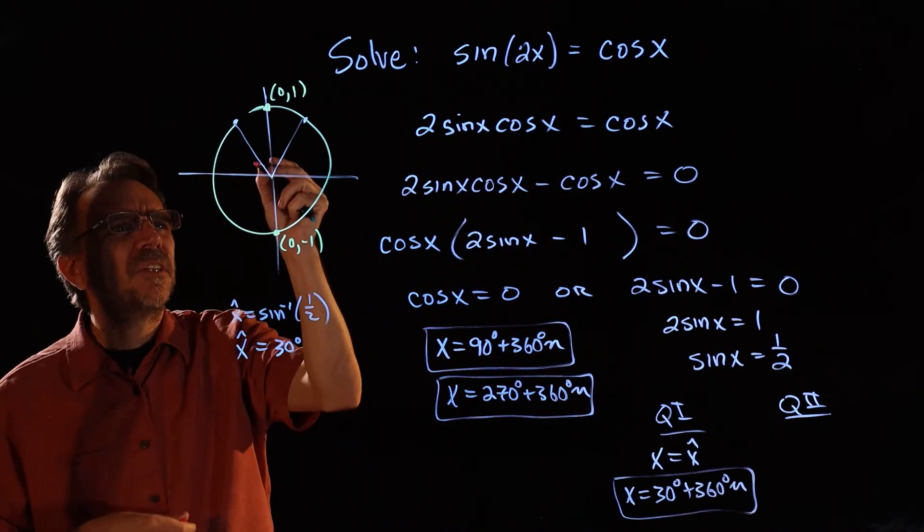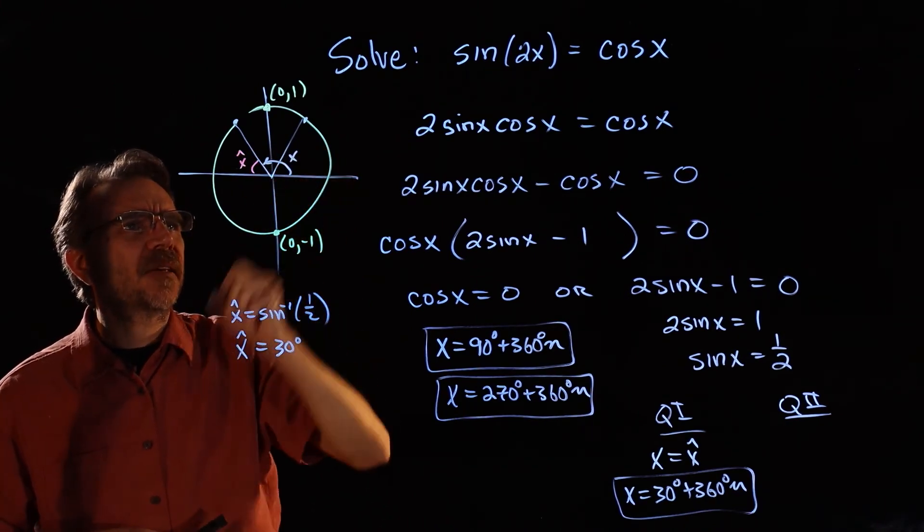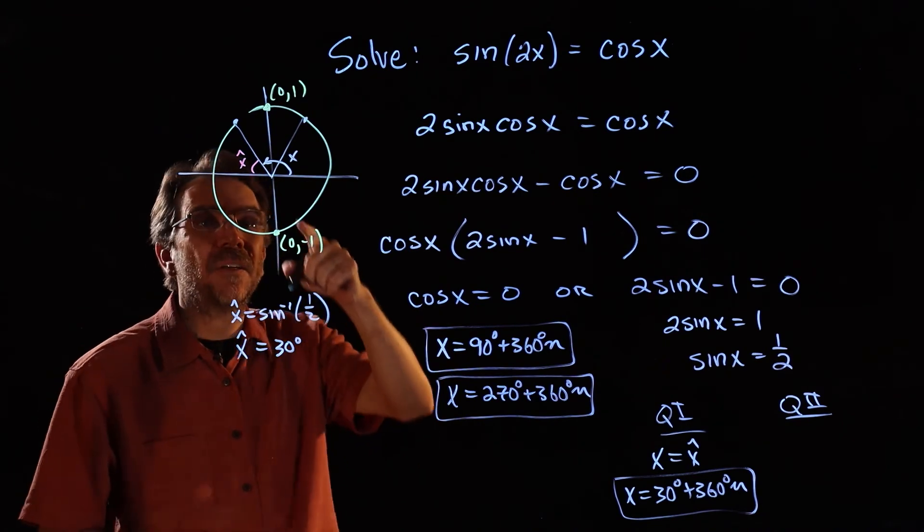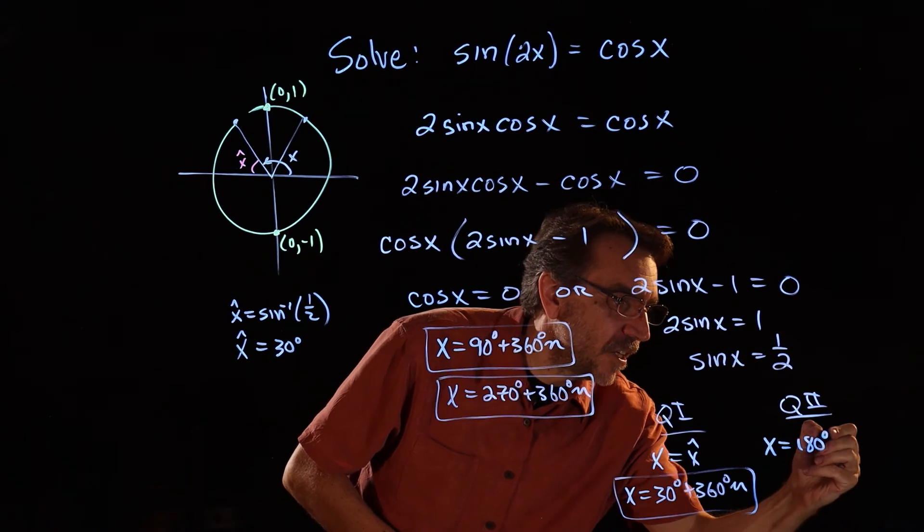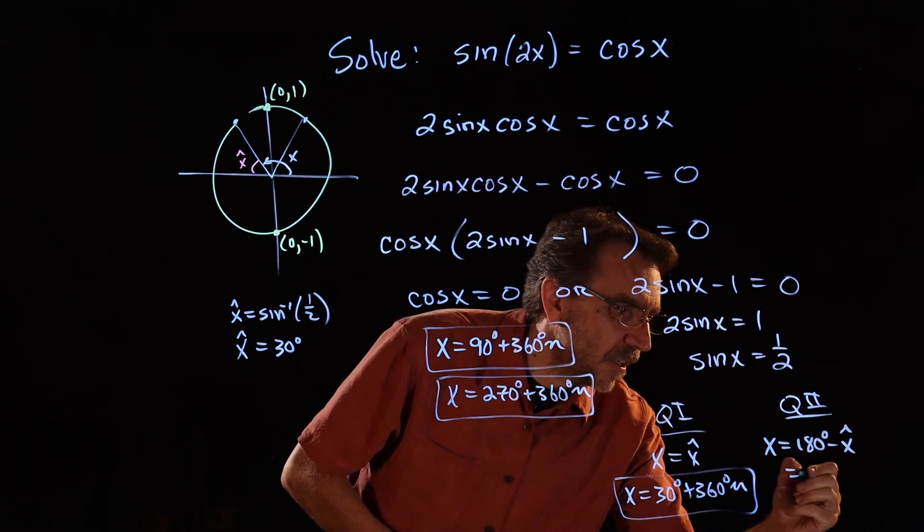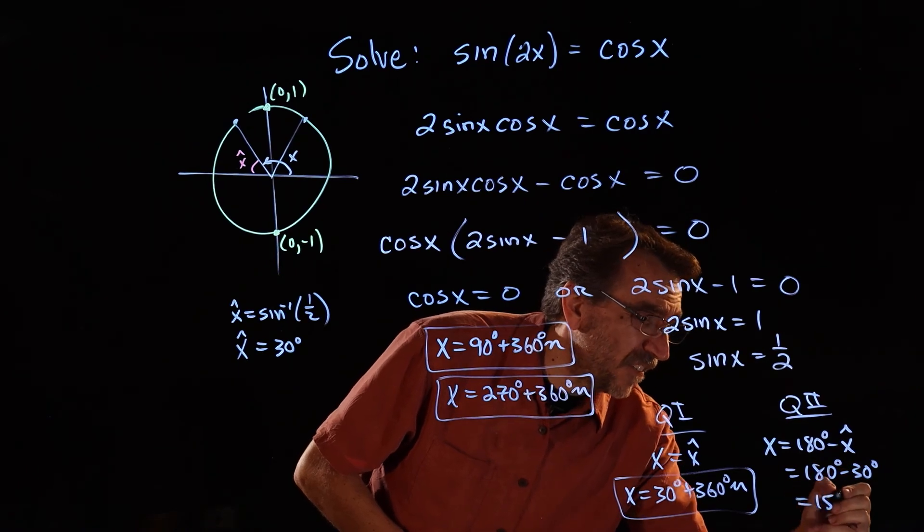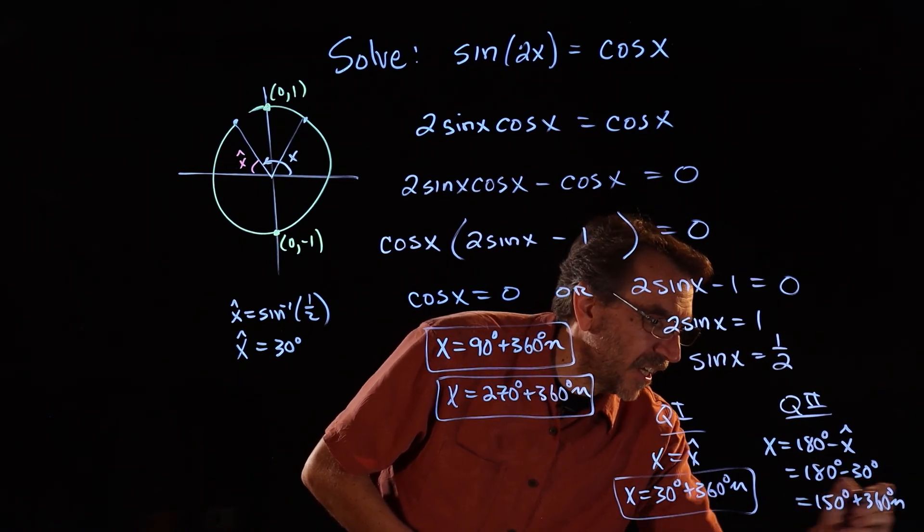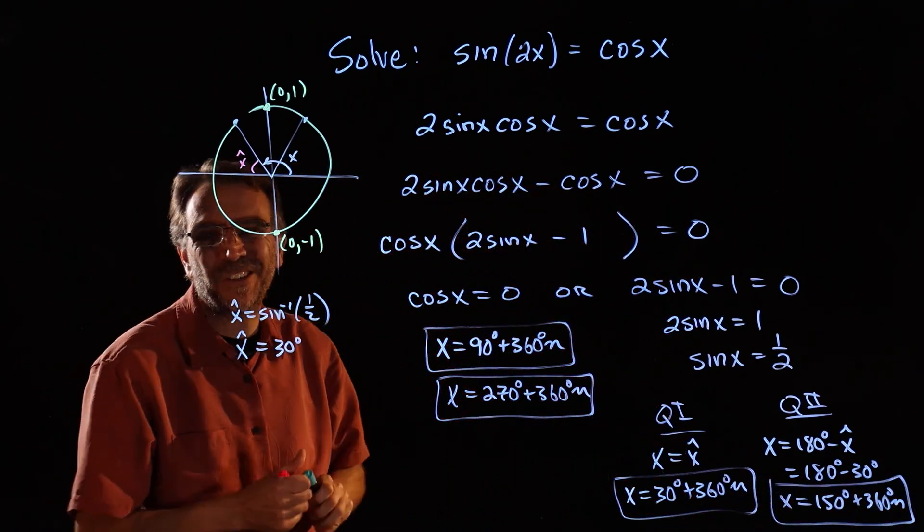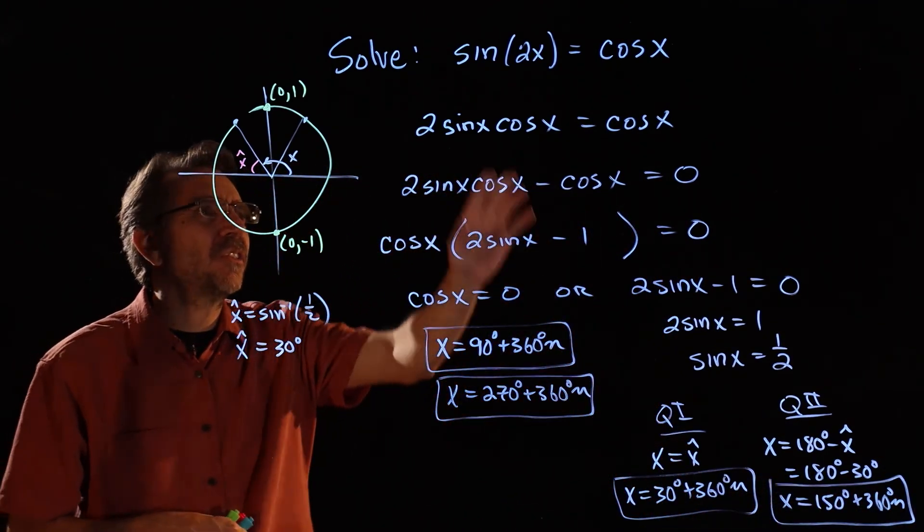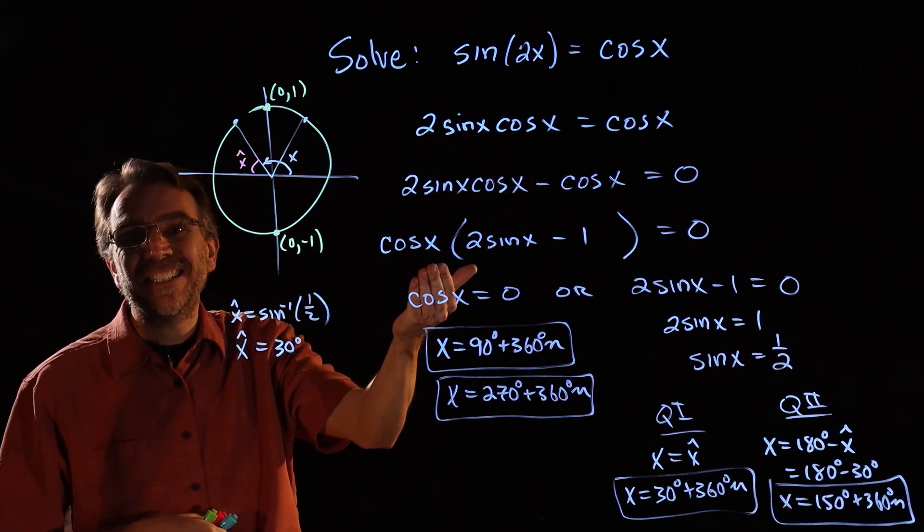And then here in quadrant 2, we are looking for this angle here, x. Now for the quadrant 2 answer, we'll take 180 minus the reference angle. So we have x equals 180 degrees minus 30 degrees is 150 degrees. And then we'll tack on our 360 n. And there's all the solutions coterminal in quadrant 2. So these are all the solutions to this original trigonometric equation. Notice we had to use a trig identity and then find a GCF.